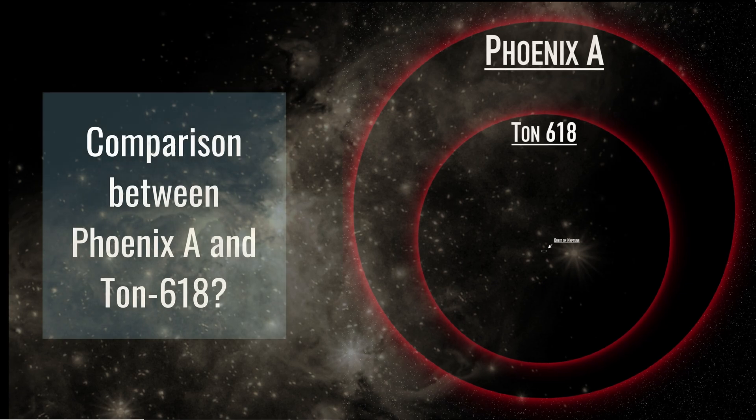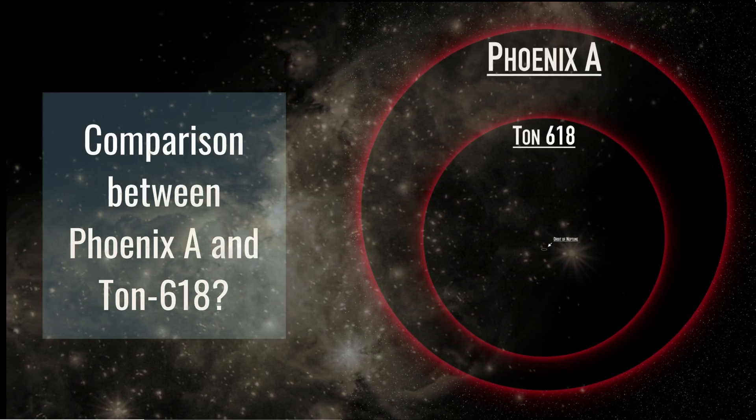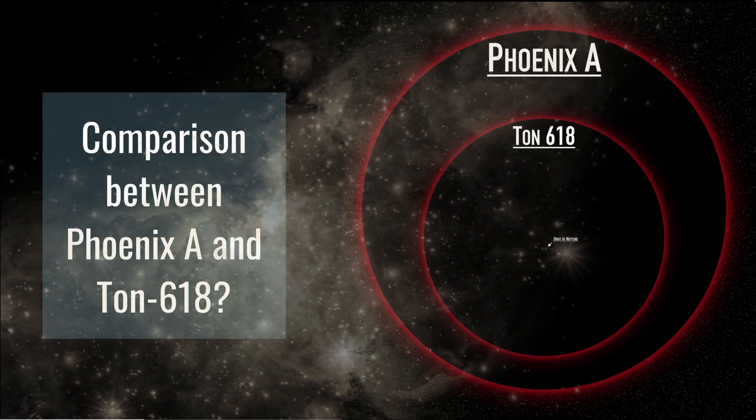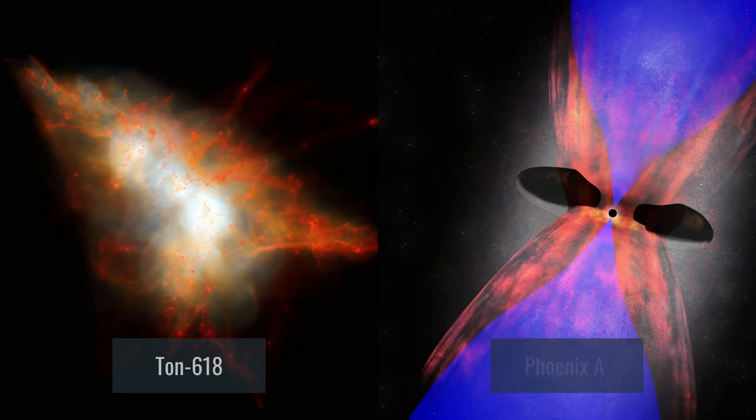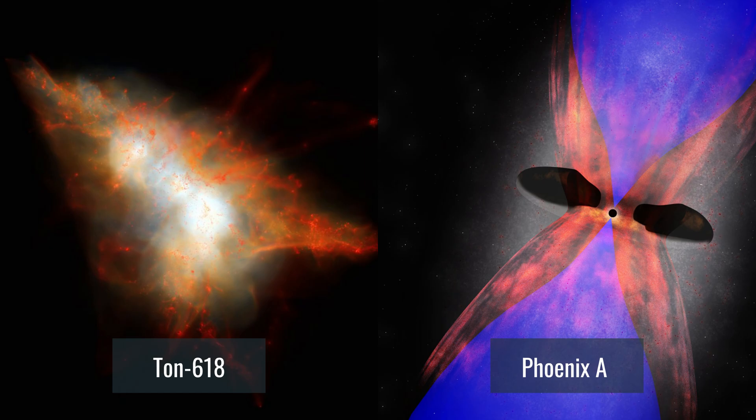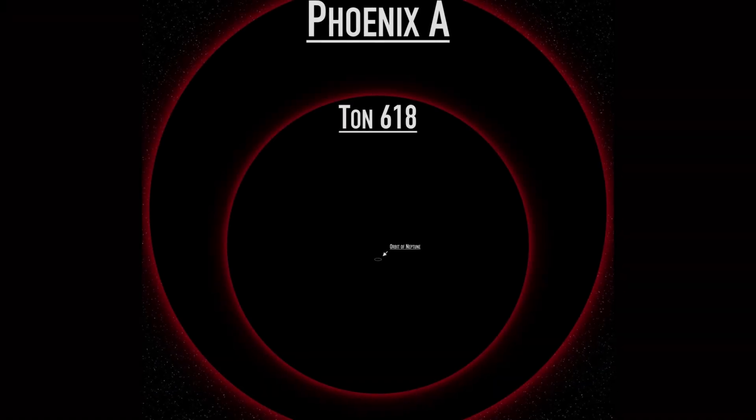What if we compare Phoenix A and TON 618? What do you think is the difference between both black holes? Because as we know, both of them are considered to be supermassive.